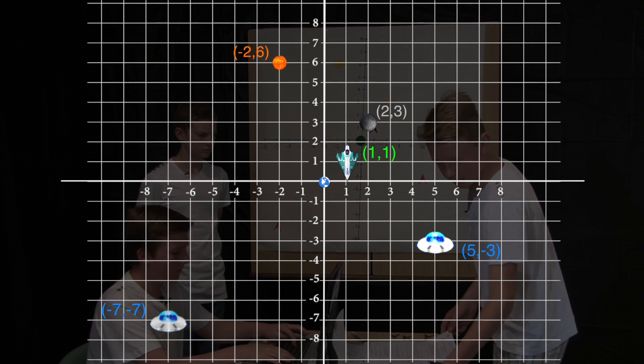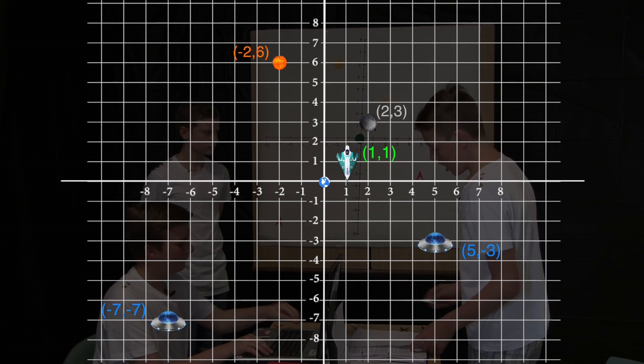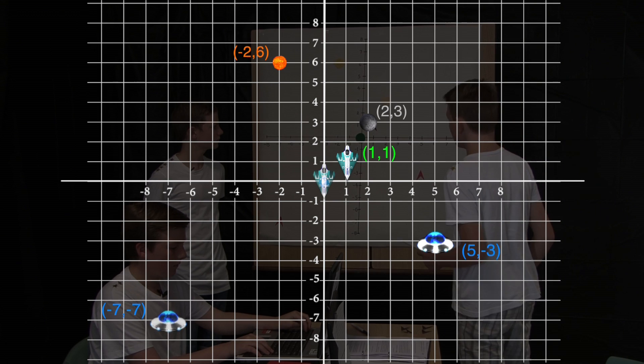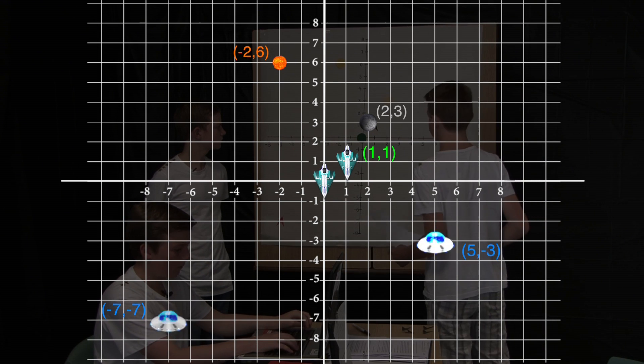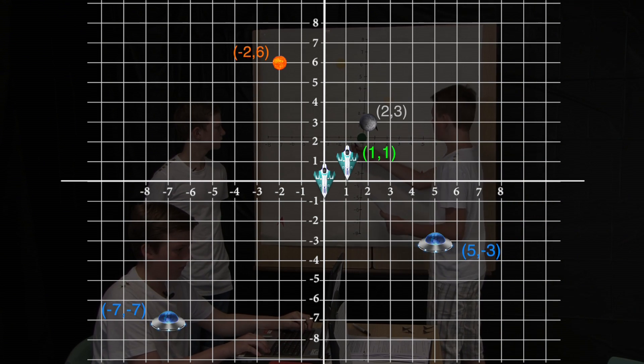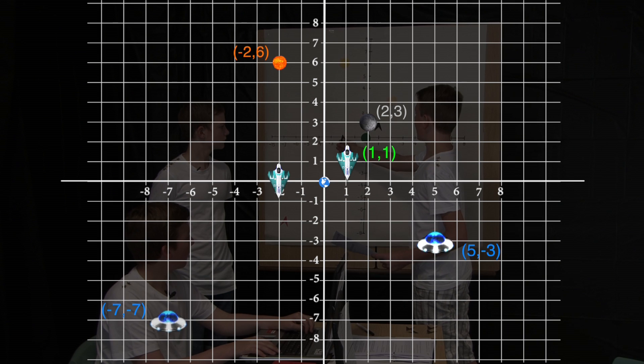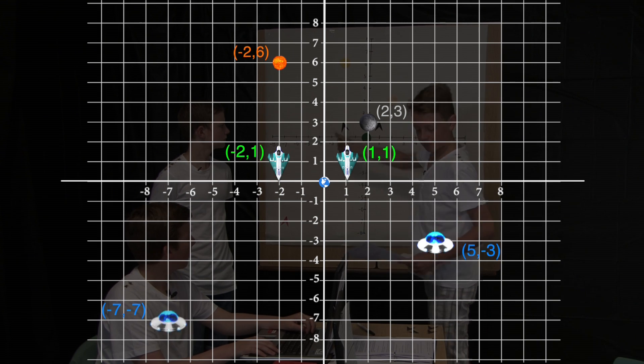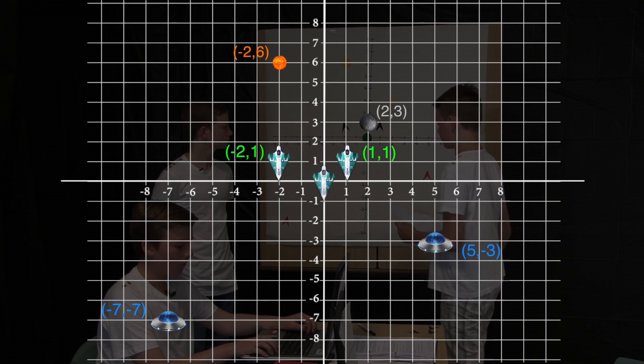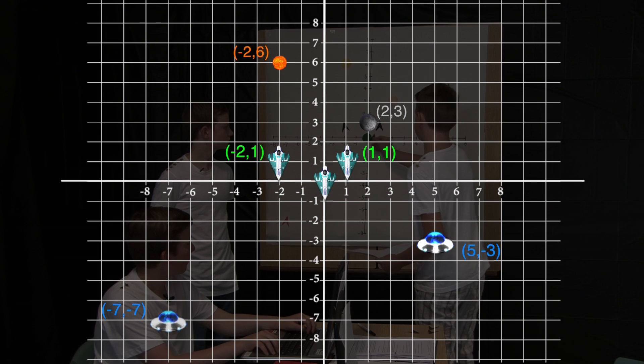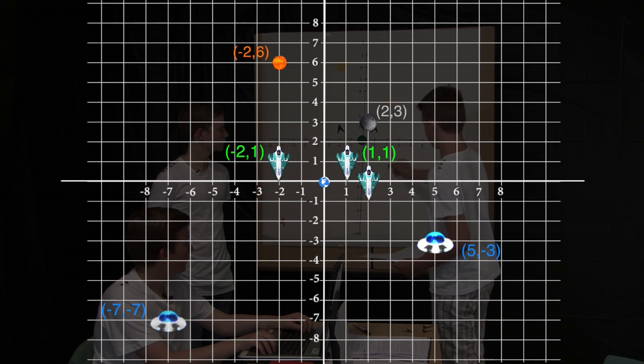We have two spaceships at the coordinates of minus two, one and two, minus five. I'll start at the origin, move two places to the left and one place up. And I'll start at the origin again, two places to the right and five places down.